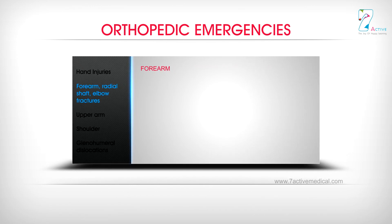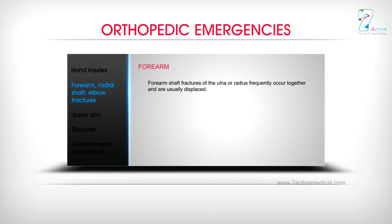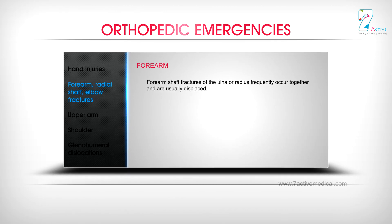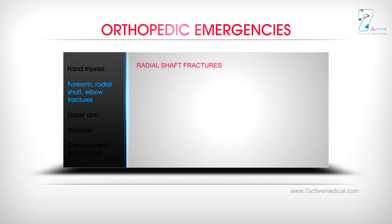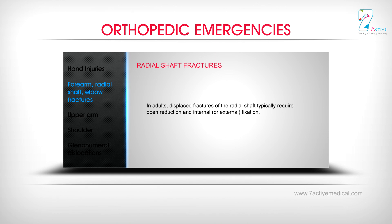Forearm: Forearm shaft fractures of the ulna or radius frequently occur together and are usually displaced. Types include Nightstick fractures, Monteggia fracture-dislocation, and Galeazzi fracture. Radial shaft fractures in adults: displaced fractures of the radial shaft typically require open reduction and internal or external fixation.